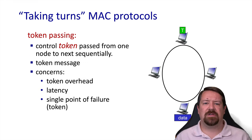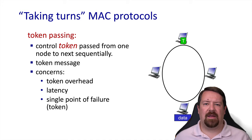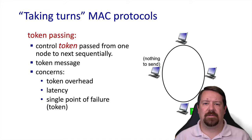A decentralized version of taking turns is token passing. The nodes are logically arranged in a ring and they pass a token from one to another. If the node needs to transmit something, it does so and then passes the token. If it doesn't need to transmit anything, it just passes the token. Again, there's some overhead with passing the token, and if the ring breaks anywhere, the system is down because the token will get lost. In practice, both polling schemes and token passing schemes were implemented and deployed, but Ethernet with CSMA-CD became the dominant protocol in the marketplace.